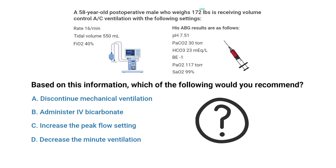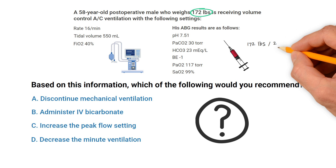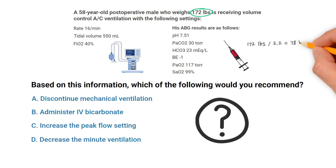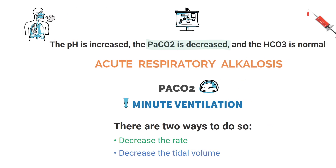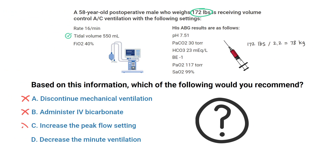To take it one step further, you can use the patient's ideal body weight to determine if the tidal volume is set appropriately. 172 pounds divided by 2.2 gives you an ideal body weight of 78 kilograms. At that weight, a set tidal volume of 550 milliliters is within the appropriate range. This tells us that in order to decrease the minute ventilation, we would need to decrease the set rate.